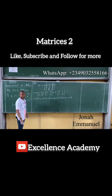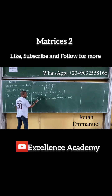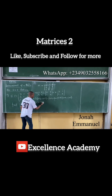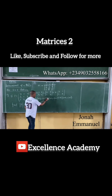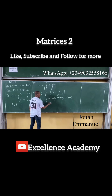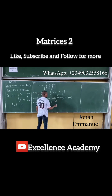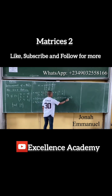Let's try the surface. What do you have here? This is now equal to 3 into: 1 times 3 is 3, minus 8 times 5 is 40. Minus 2 times 3 is 6, minus 8 times 1 is 8. Plus 4 into 2 times 5 is 10, minus 1 times 1 is 1.